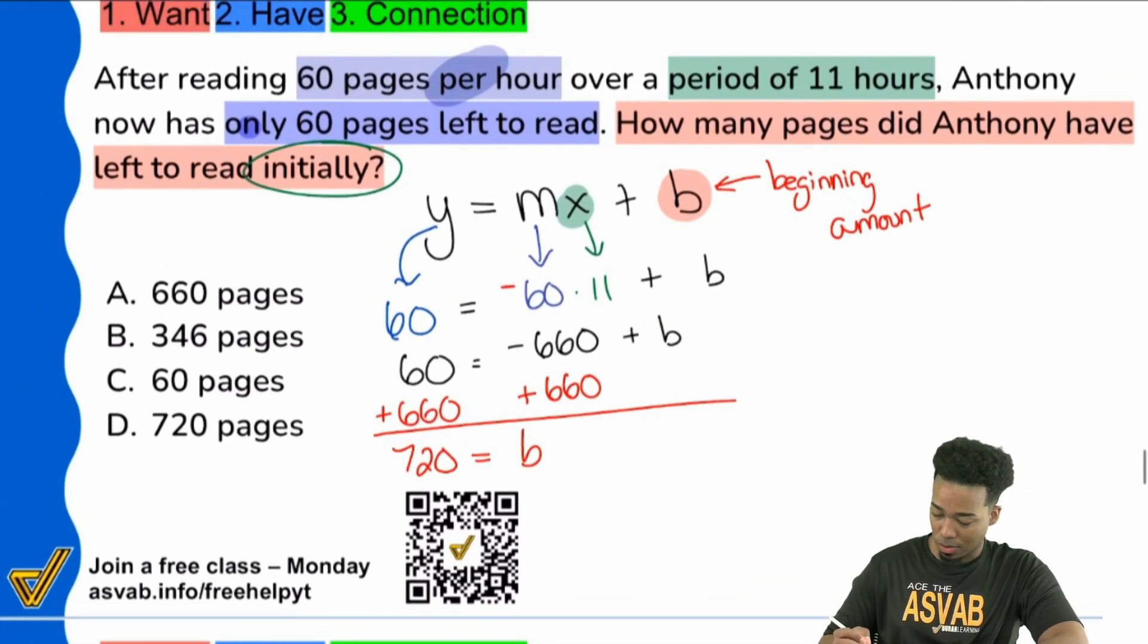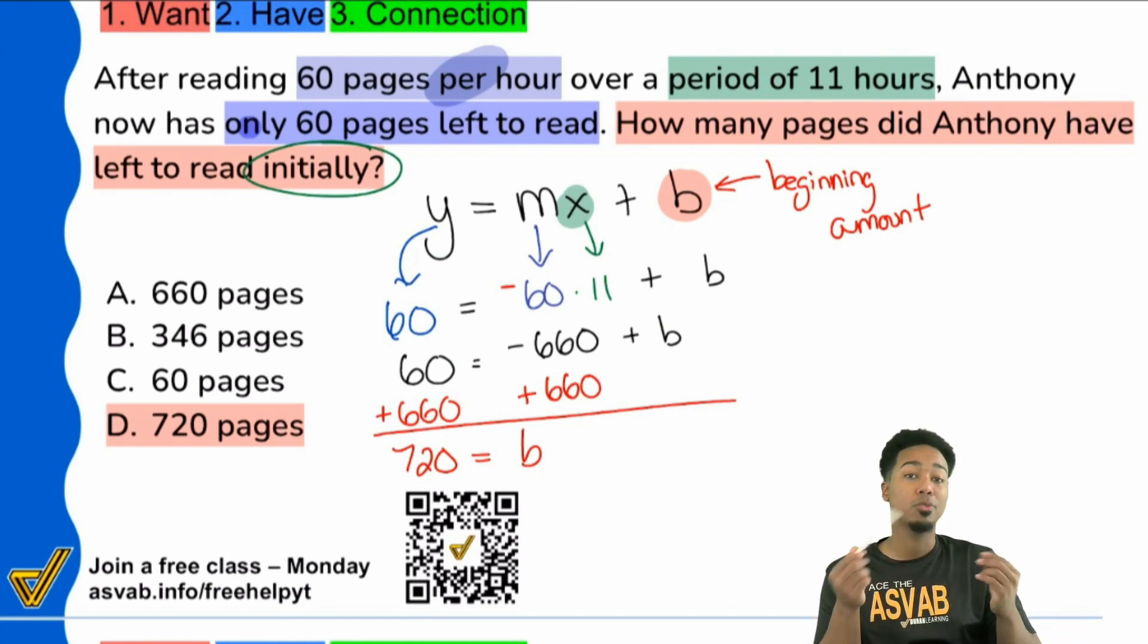So that means we began, we began, or Anthony, whoever we're talking about. Anthony began with 720 pages left to read. And then after he was done reading over 11 hour period, boom, he had 60 left to go.